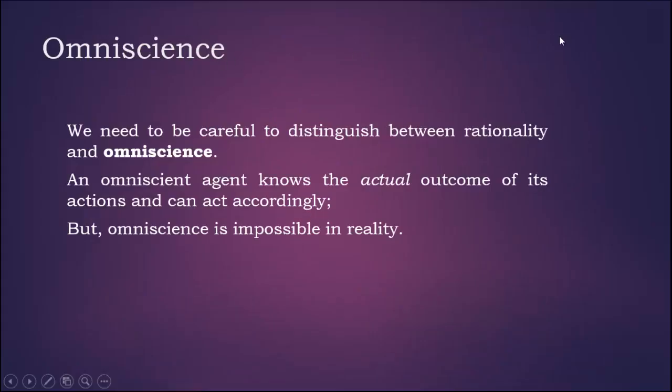While measuring the performance of an intelligent agent, we should not assume it is omniscient. We need to carefully distinguish between rationality and omniscience. An omniscient agent knows the actual outcome of its actions and can act accordingly, but omniscience is impossible in reality.